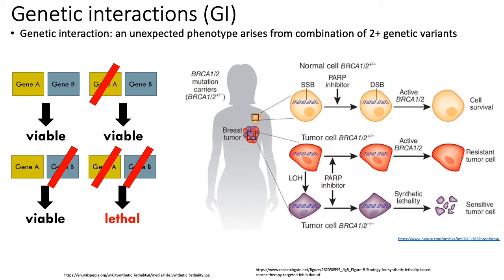One of the most famous examples of synthetic lethality and its practical applications is the story of BRCA1. There exists a gene called PARP1, which is basically a sensor of DNA damage. PARP1 helps dictate which DNA repair pathway activates when you have DNA damage. When you down-regulate or inhibit PARP1, you get an accumulation of single and then double-stranded DNA breaks.